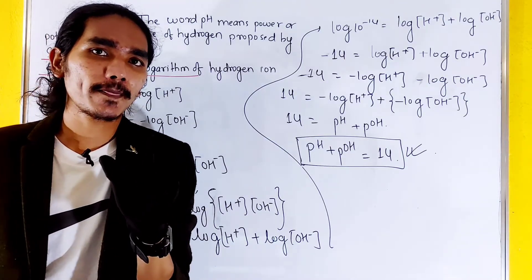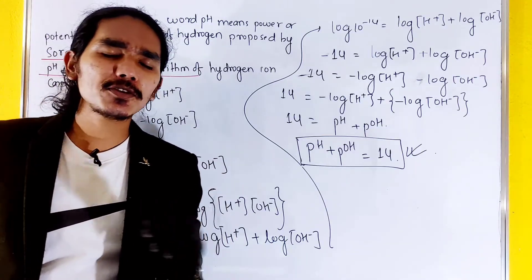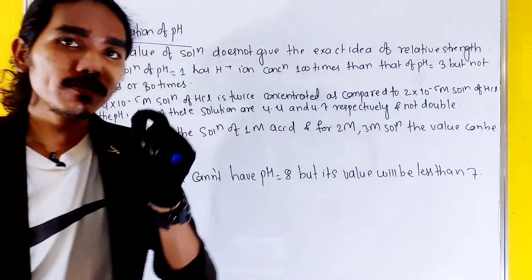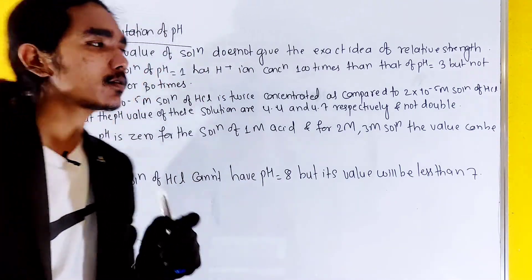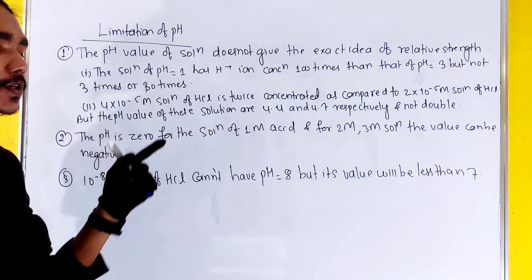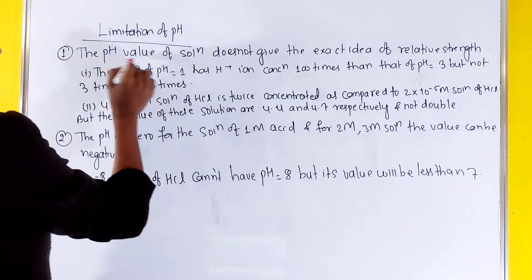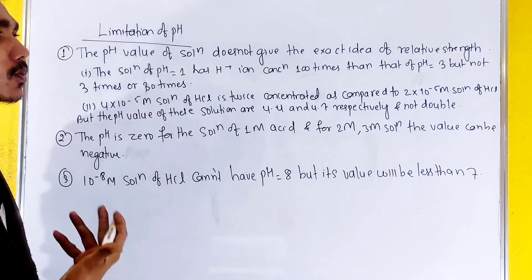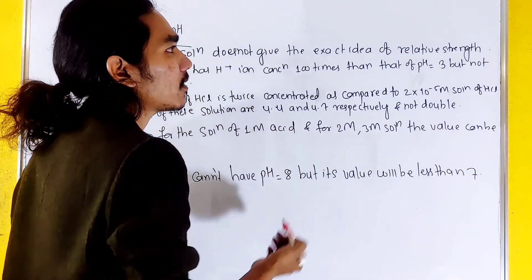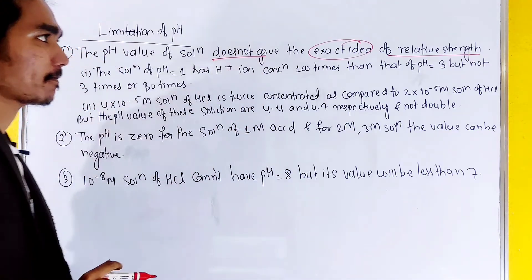What is the concept of auto-ionization? We will discuss the limitations point-wise. What is the limitation? What is the exact relative strength? The pH value of a solution does not give the exact idea of relative strength.